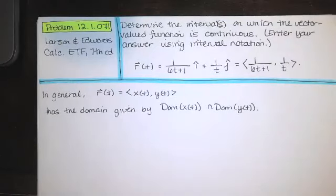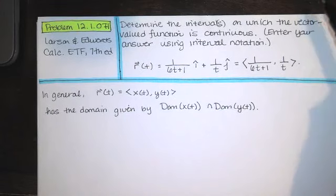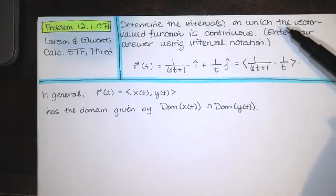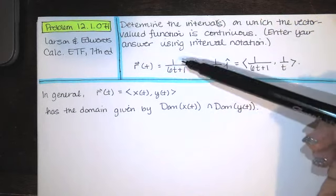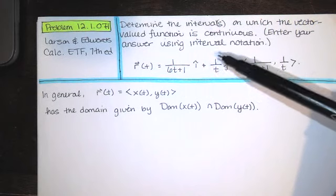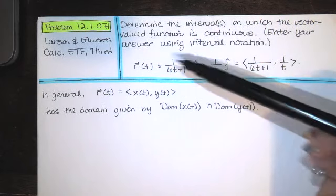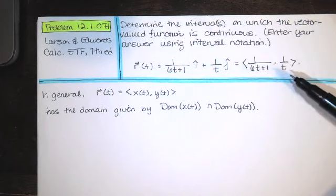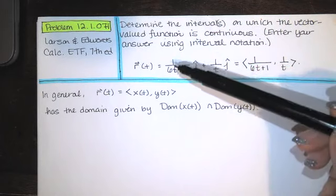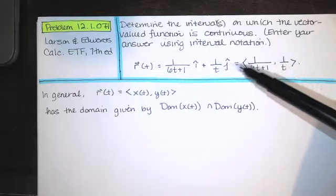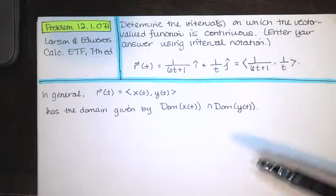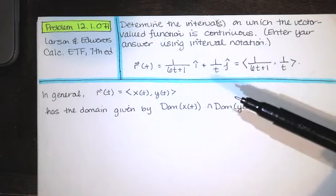This video we solve problem 12.1.071 from the Larson and Edwards Calculus Early Transcendental Functions text, 7th edition. We're asked to determine the intervals on which the vector-valued function is continuous, and then enter our answer using interval notation. We have r(t) equal to a function of t times i-hat plus a function of t times j-hat. I prefer to write that in component form with the x component and y component separated by a comma in brackets.